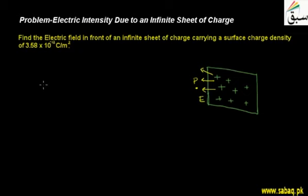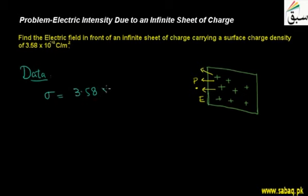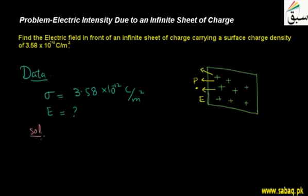Now let's look at our given data. The surface charge density of the sheet is 3.58 × 10⁻¹² coulomb per meter squared, and we have to find out the electric field due to this infinite sheet of charge. We will now calculate using the formula for electric field due to an infinite sheet.